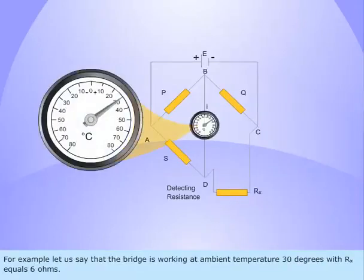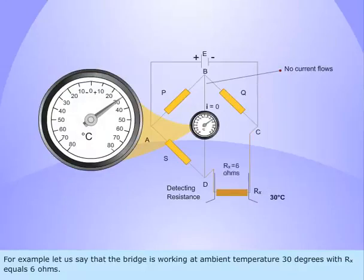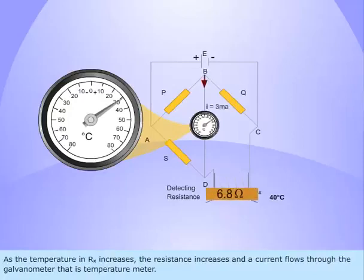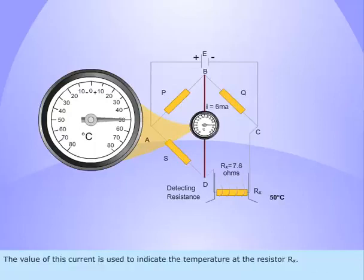For example, let us say that the bridge is working at ambient temperature 30 degrees with Rx equals 6 ohms. Some current flows through the galvanometer, i.e. temperature meter, showing 30 degrees. As the temperature in Rx increases, the resistance increases and a current flows through the galvanometer, i.e. temperature meter. The value of this current is used to indicate the temperature at the resistor Rx.